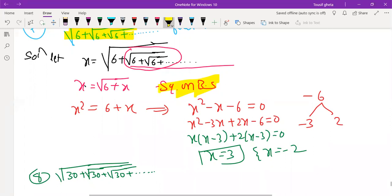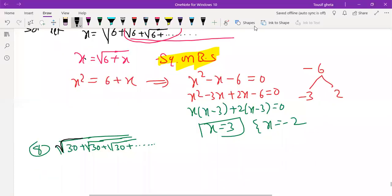Very good Bhavna Gowda. Very good Diwarani write x is equal to, Rakshita write root 30 plus root 30 plus root 30.